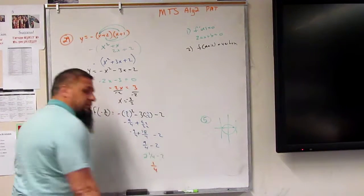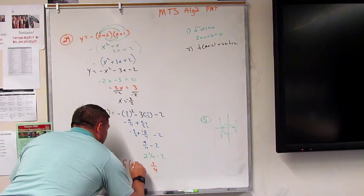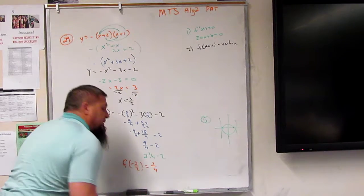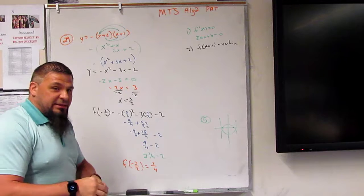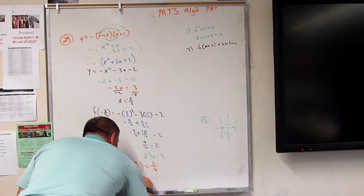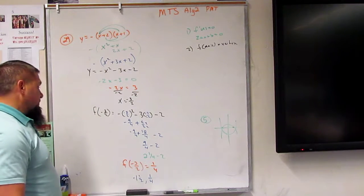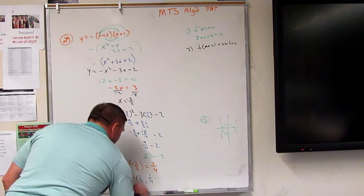So when we're talking about f of negative 3 halves, we're equaling to this. So the vertex in this case is negative 1 and a half and 1 quarter. So that's your vertex.